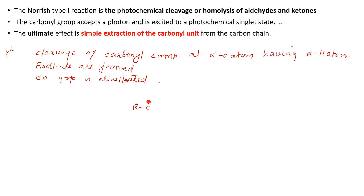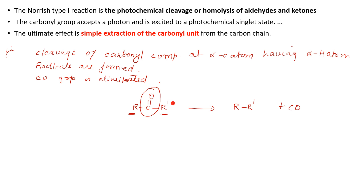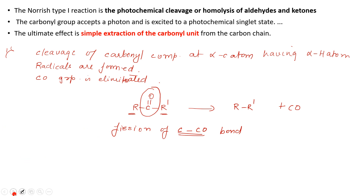In simple words, if I give you the reaction: this is your carbonyl group, a keto group. The carbonyl group is eliminated - carbon monoxide is formed - and whatever is left just forms a bond between them. Norrish 1 means whatever carbonyl compound is given to you, just remove that C=O and put a double bond. There are two types depending on temperature. There is fission of the carbon and carbon monoxide bond.